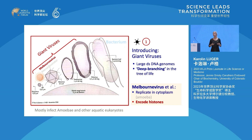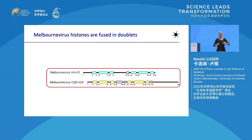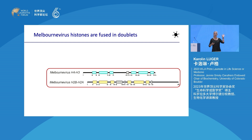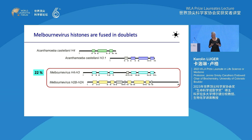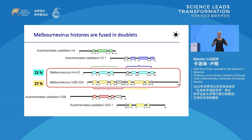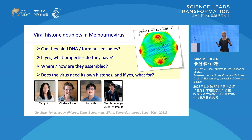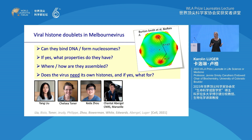Giant viruses also have large double-stranded DNA genomes and are considered very deep branching in the tree of life. One particular family of viruses caught our attention — the Melbourne virus and related organisms. They replicate exclusively in the amoeba cytoplasm and they encode their own histones. These histones are fused as doublets: histone H4 is fused to histone H3, and histone H2B is fused to histone H2A. Overall they're also very, very poorly conserved — only 22% conservation for H4/H3 and about 27% for the other two histones. For histones, which are among the most conserved proteins known, this is an astonishingly low number.